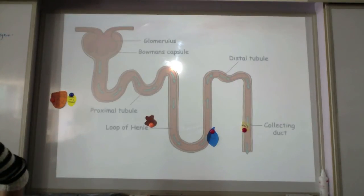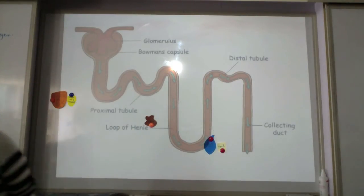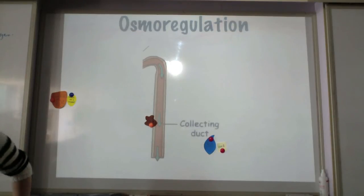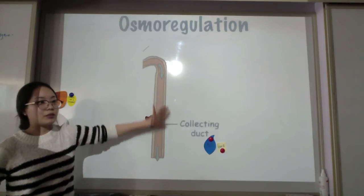So this is the overall. And now we're going to focus on the collecting duct. So in the collecting duct there is osmoregulation. And the collecting duct flows from the medulla to the renal pelvis.